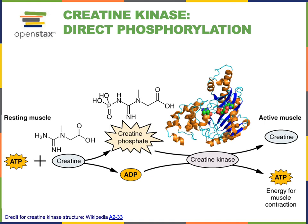When the muscle is at rest, creatine phosphate can be regenerated as creatine can be phosphorylated from ATP. Then when the muscle needs to use ATP rapidly during contraction, creatine phosphate can be used in order to rapidly regenerate ATP.